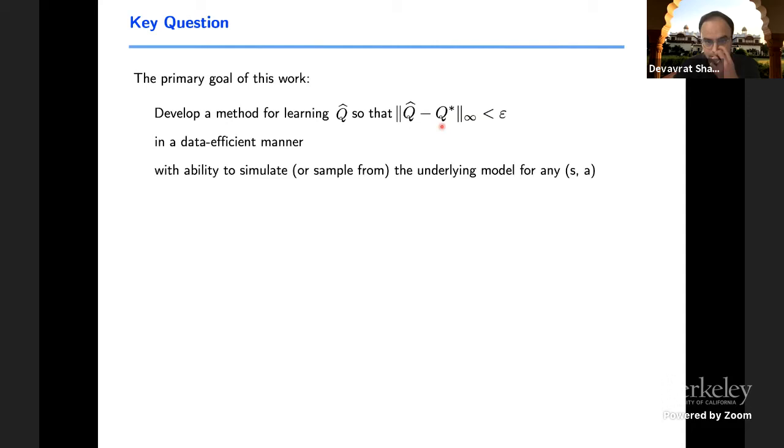The key question of interest in this work is coming up with estimation of Q star. In particular, we want to find Q hat so that its infinity norm error is less than epsilon in a data efficient manner. So what is data here? Data here is the number of simulation steps.